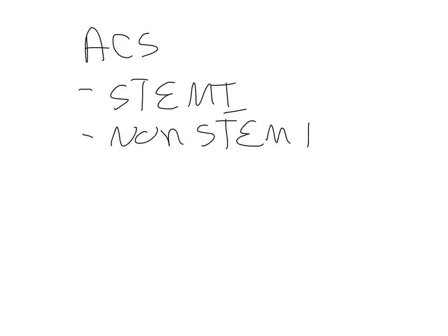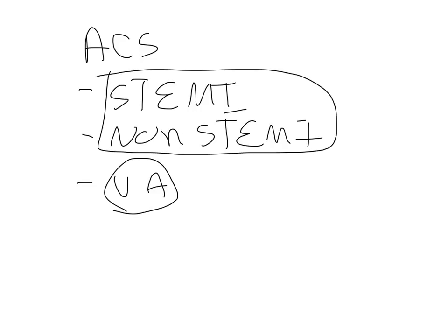Before I get into it, I want to point out that myocardial infarction is a form of acute coronary syndrome, ACS. ACS has basically three subcategories: ST-segment elevation myocardial infarction, non-ST-segment elevation myocardial infarction, and unstable angina. Unstable angina is important because it can turn into a myocardial infarction, but for the purpose of this lecture, I'll focus on the top two.